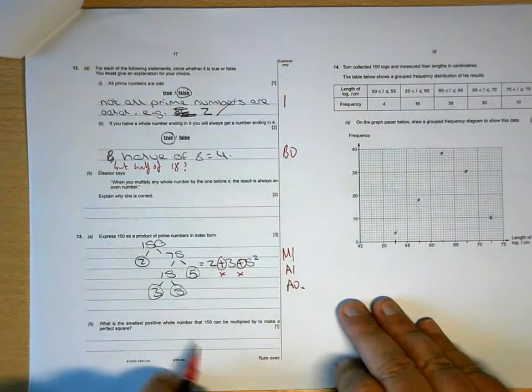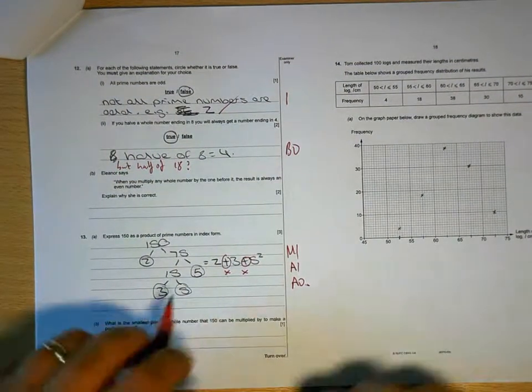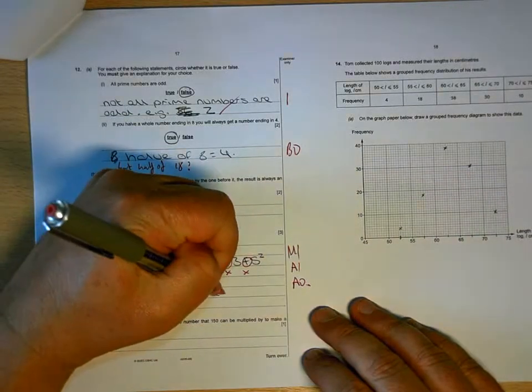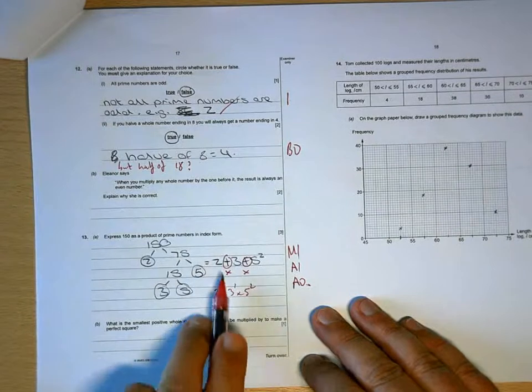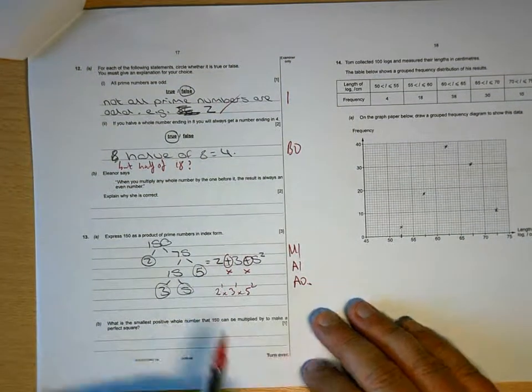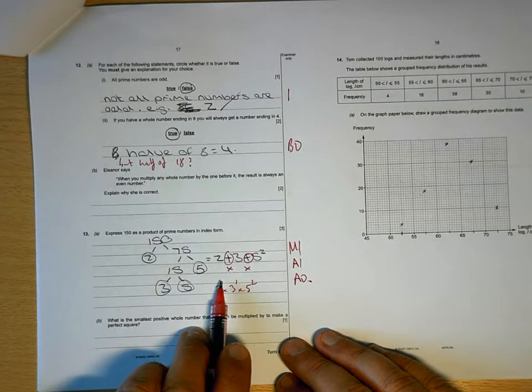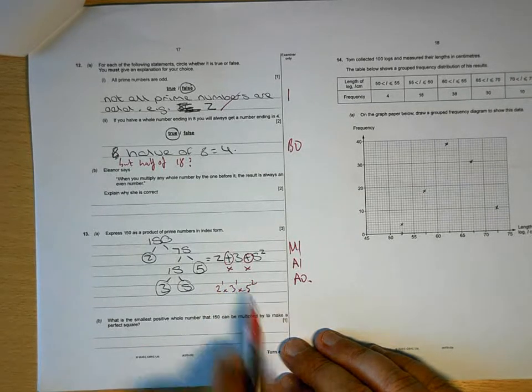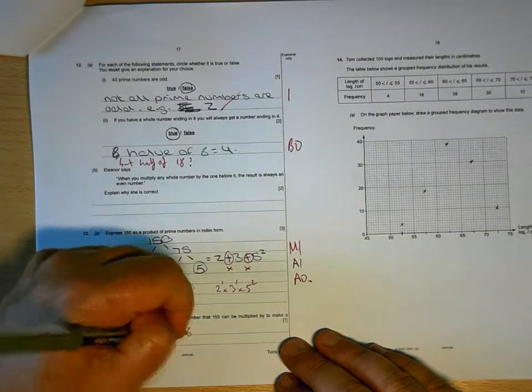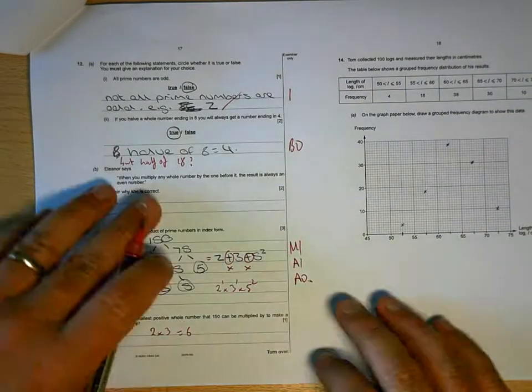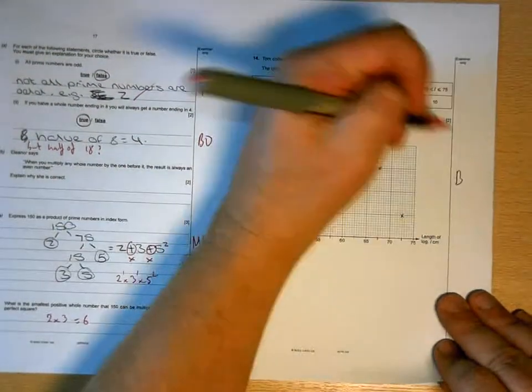So you're going to lose a mark there for that. And then if you remember when we did this in class, square numbers all have positive powers. So there's a one there, we just don't bother writing it in. So in order to make that a positive power, if I times it by 2 that would give me 2 squared, times it by 3 would give me 3 squared. So what I end up multiplying by is 6.